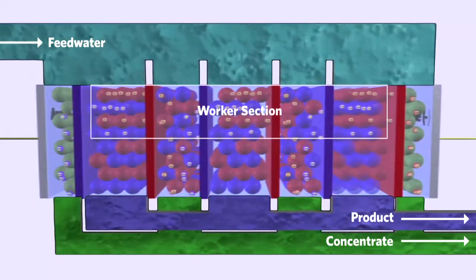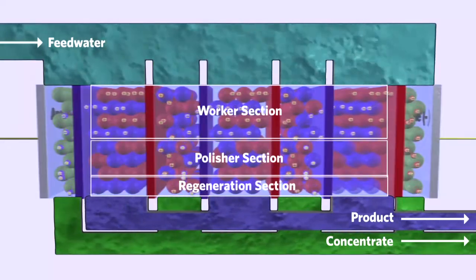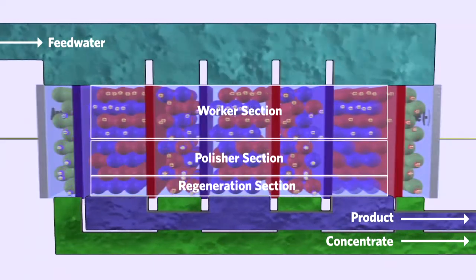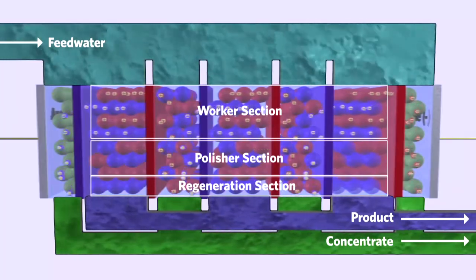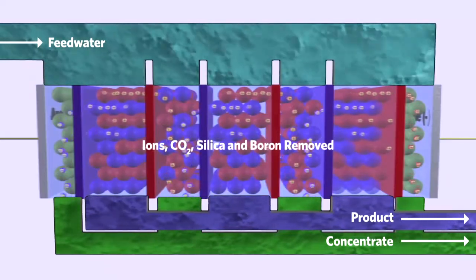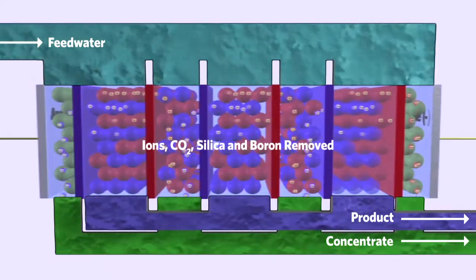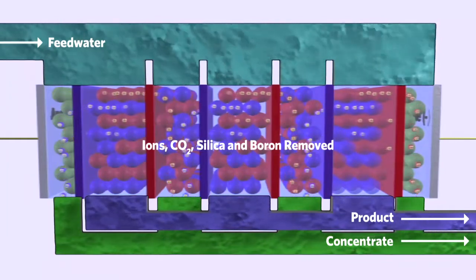You essentially have a worker and polisher combined into one unit, which constantly regenerates. And IonPure CEDI systems are more effective than other electrodeionization systems when it comes to removing dissolved materials such as salts, acids, and bases, as well as weakly ionized materials such as dissolved organics, silica, boron, and carbon dioxide.